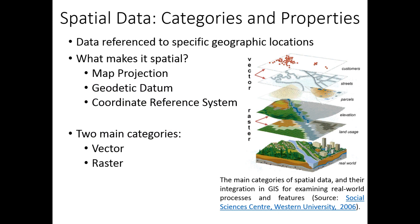In the previous video, we introduced spatial data as data referenced to specific geographic locations through coordinates. Today we'll discuss three listed properties that make datasets spatial and explore the main categories of spatial data, vector and rasters, as well as their characteristics, subtypes, and common file formats. The figure on the right nicely depicts some of the properties and subtypes of these two spatial data categories and their integrated use in capturing complex, real-world processes and features.